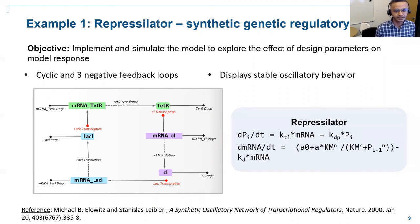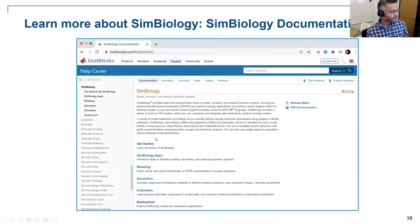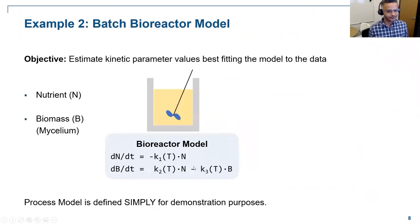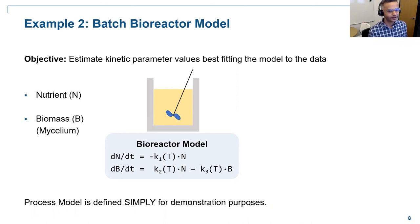Is it possible to do parameter estimation in SimBiology for systems with ODEs if you only have experimental data for one variable, like biomass but not nutrients? Since these are coupled ODEs, if you change one the other also changes. You could estimate K2 and K3 from biomass data alone, but you wouldn't capture the full effect of the coupled system. However, if you have nutrient data for a few time steps, you can interpolate and use that for parameter estimation. Without any nutrient data, it becomes very tricky.